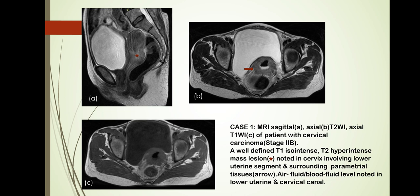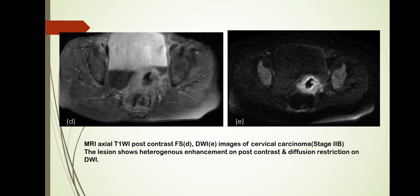These are the images of the first case, presented with cervical carcinoma staged at stage 2B. Images A and B are the sagittal and axial sections of T2-weighted images, and C is the axial section of the T1-weighted image, showing a well-defined T1 iso-intense, T2 hyper-intense mass lesion (marked with an asterisk) noted in the cervix involving the lower uterine segment and surrounding parametrial tissues (shown by arrow). Air-fluid or blood-fluid levels are noted in the lower uterine and cervical canal. T1-weighted post-contrast and diffusion-weighted images (D and E) show heterogeneous enhancement on post-contrast and diffusion restriction on DWI.